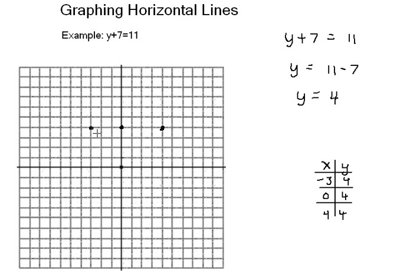And if I go ahead and graph this, notice that if I connect the points, I get a horizontal line. You'll always get a horizontal line when you have y equals some constant. And whatever the constant is—4, negative 10, whatever it is—that's where it goes through the y-axis.